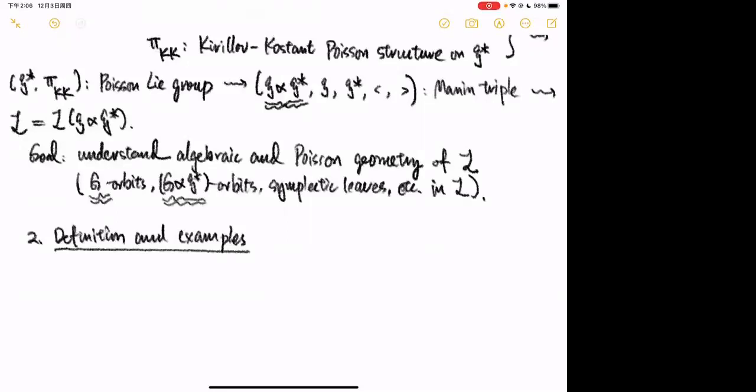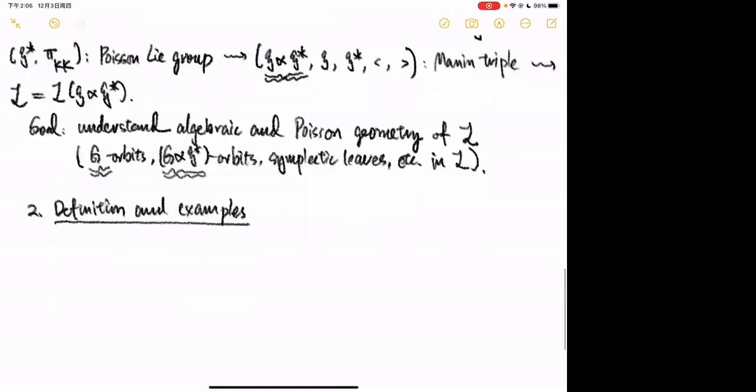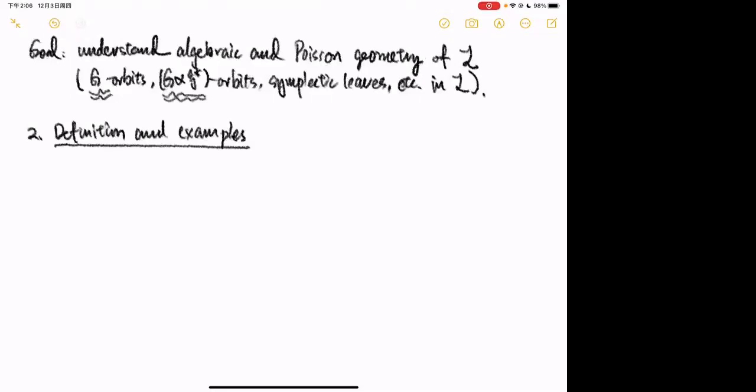In joint work with Sam Evans, we classified closed orbits of G semi-direct product G*, and found that they correspond to abelian ideals of the Borel subalgebra — which is quite surprising. But to classify all G-orbits, one would need to classify all finite-dimensional Lie algebras, which is a wild problem. So we restrict our attention to certain subvarieties of L.